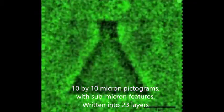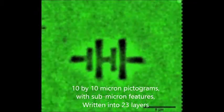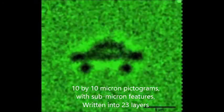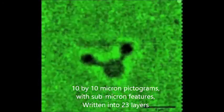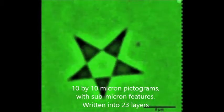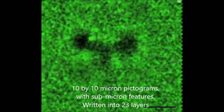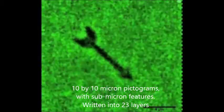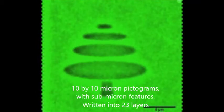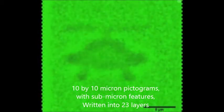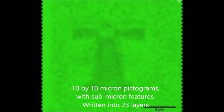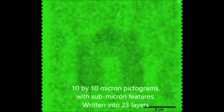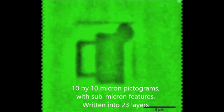Here, we have written 23 layers of 10 by 10 micron pictograms in a confocal microscope, with the smallest features measuring only a few hundred nanometers, the diffraction limit of the laser. The images appear layer by layer as the reading lens moves the focus deeper into the film. These stacked images demonstrate little or no interlayer crosstalk, and good signal-to-noise ratio.